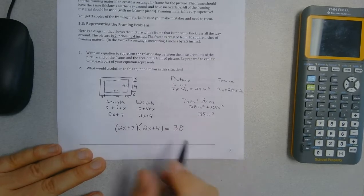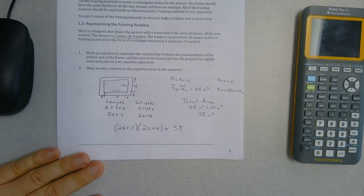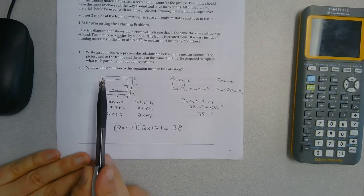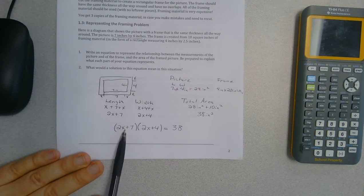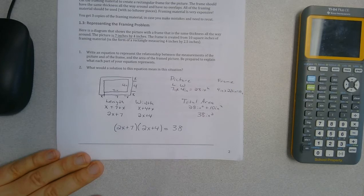So this equation means if I multiply the length of my picture with frames times the width of my picture with frames, I get an area of 38 square inches.